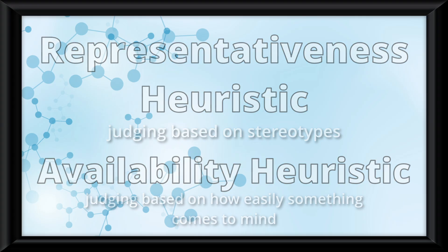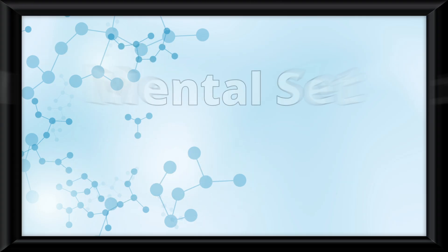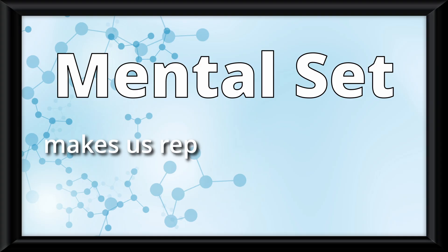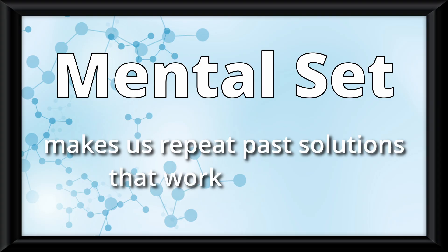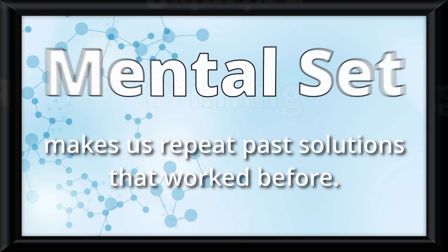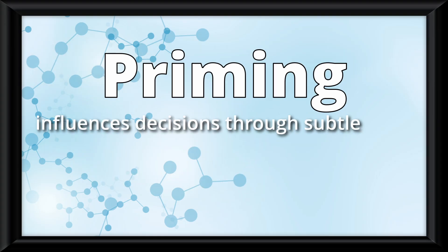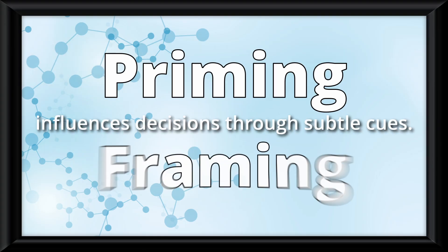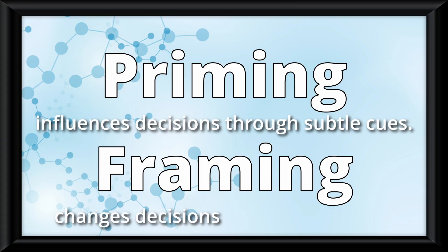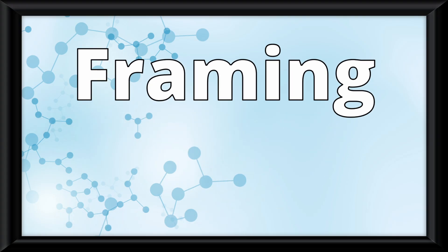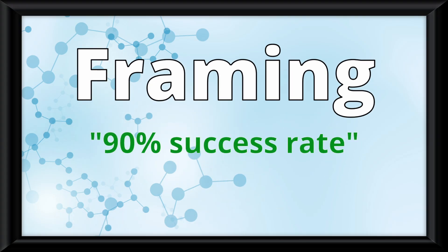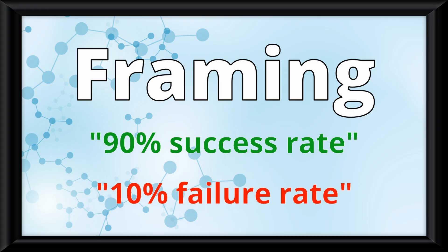Decision-making is also shaped by other factors. A mental set makes us repeat past solutions that worked before. Priming influences decisions through subtle cues, while framing changes decisions based on wording. An example of framing might be when you say a 90% success rate versus a 10% failure rate.